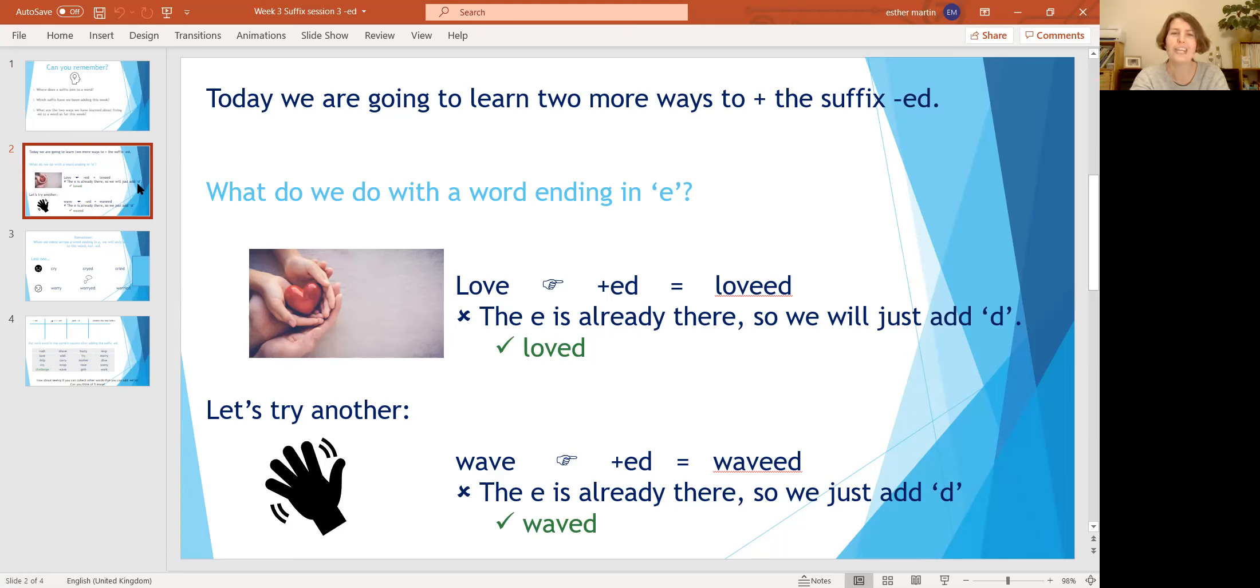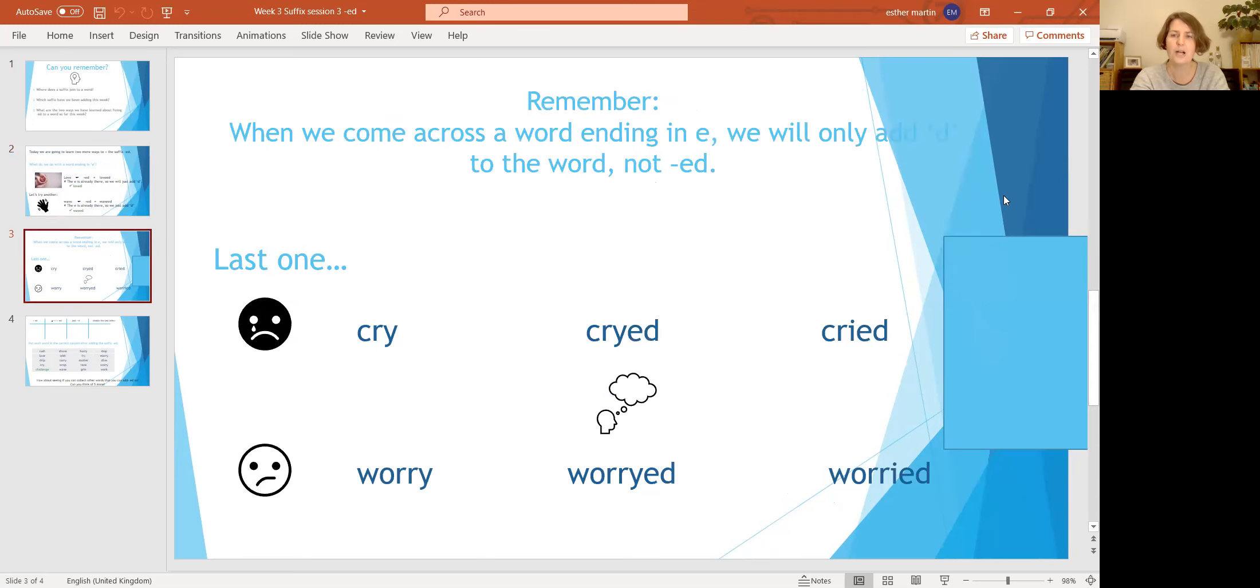Okay, let's look at our next one. This time I've got two quite sad pictures. Can you see them? I've got the word 'cry' and I've got the word 'worry'. Now if we followed our very first rule, which is to just add -ed, the middle column shows you what it would look like. We'd keep the word and then we just add -ed.